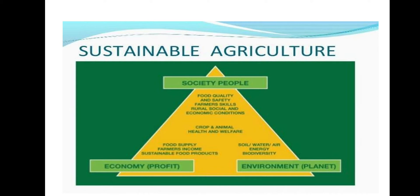Sustainable agriculture is a type of agriculture that focuses on producing long-term crops and livestock while having minimal effect on the environment. This type of agriculture tries to find a good balance between the need for food production and the preservation of the ecological system within the environment. Sustainable agriculture contains four pillars: society, people, environment, and economy.